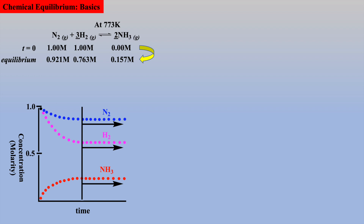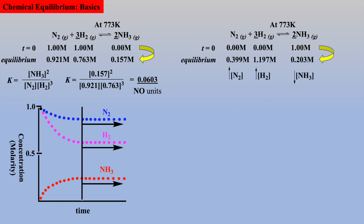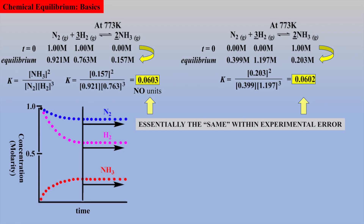Now let's calculate the extent of this reaction via the equilibrium constant. The concentrations of products and reactants were recorded, and an equilibrium constant calculated at this temperature. Note there are no units for the equilibrium constant. In another experiment, only the product ammonia is introduced into the reaction flask at the same temperature. As expected, the concentration of product decreased and concentrations of reactants increased over time, to obtain new equilibrium concentrations. When these final equilibrium concentrations were measured and used to calculate the equilibrium constant, the same value was obtained.